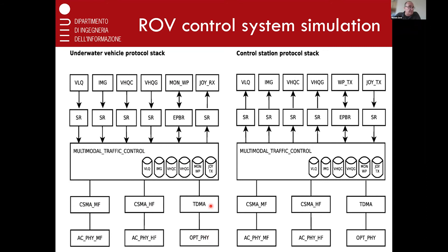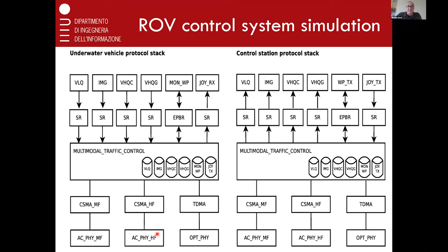For example, for optics you use TDMA because guard times are not a problem, whereas for acoustics you may use CSMA. If you measure what you can achieve — throughput as a function of distance for different technologies — you can see that overall at close distances you can achieve megabits per second, mostly provided by the optical technology for video, and then other lower quality videos and other things. We can characterize this by simulating and make choices about what to use and what to expect at different distances.